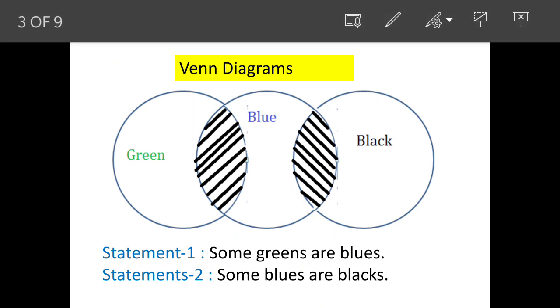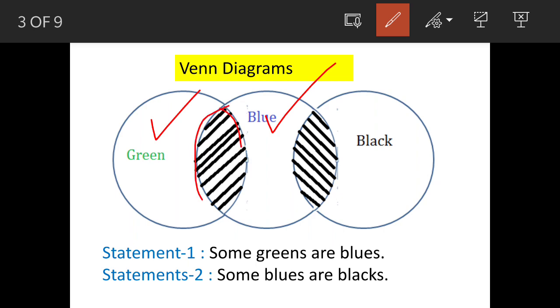Now, we will quickly draw Venn Diagram for both the statements. This is circle for greens and this is circle for blues. So, since some greens are blues, we will overlap them here and this becomes actually statement 1.